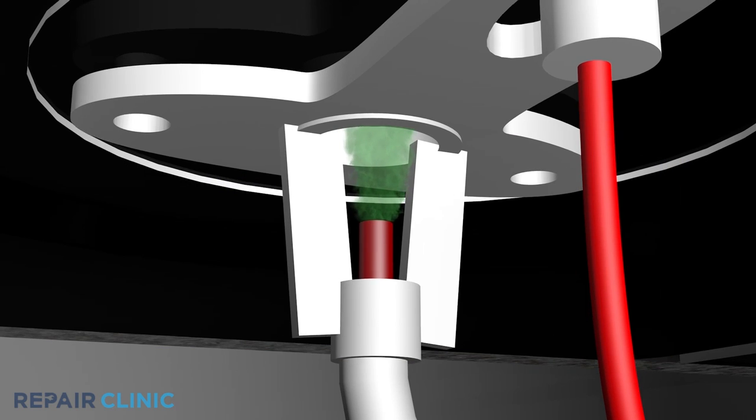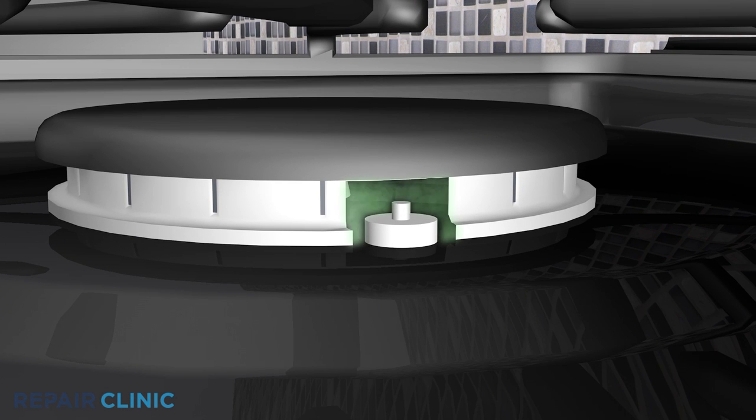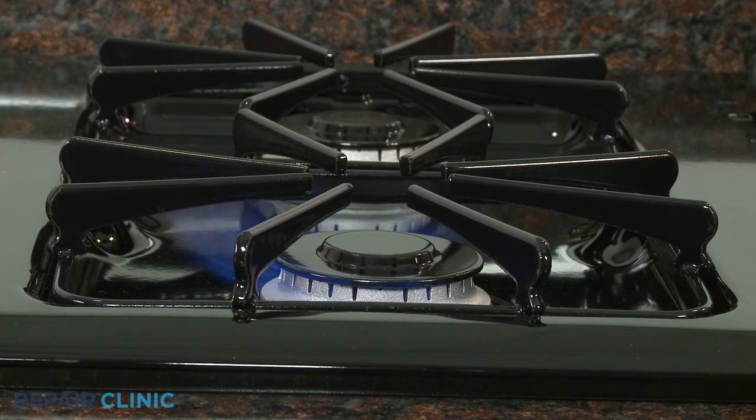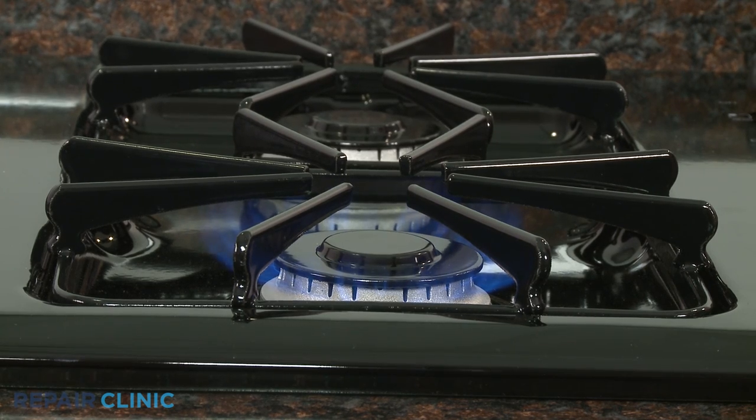The pulses cause a spark to occur between the electrode and the grounded burner cap. The gas and air mixture at the burner head is ignited by the spark, and a blue flame with an occasional yellow tip is produced.